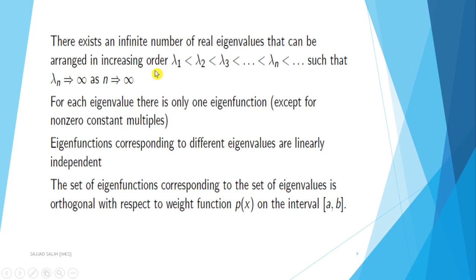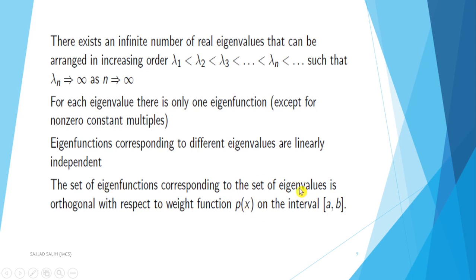There is an infinite number of real eigenvalues that can be arranged in increasing order: lambda 1 less than lambda 2 less than lambda 3 less than ... less than lambda n, such that lambda n tends to infinity as n tends to infinity. For each eigenvalue there is only one eigenfunction except for non-zero constant multiples. Eigenfunctions corresponding to different eigenvalues are linearly independent. The set of eigenfunctions corresponding to the set of eigenvalues is orthogonal with respect to weight function p(x) on the interval [a, b].